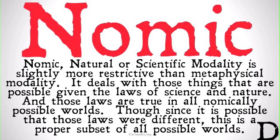Nomic, natural, or scientific modality is a slightly more restrictive kind of modality than metaphysical modality. It deals with those things that are possible given the laws of science and nature, as well as the laws of math and logic. Those laws are true in all nomically possible worlds. Since it's possible that those laws were different, this is a proper subset of all possible worlds — smaller than the set of all metaphysically possible worlds — because there could be a possible world with no logical contradictions but different laws of physics.